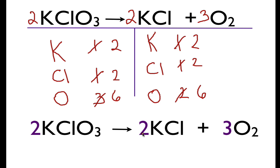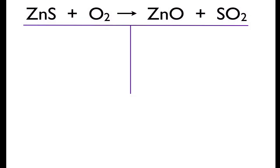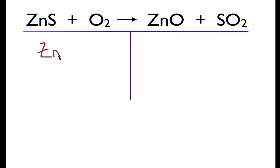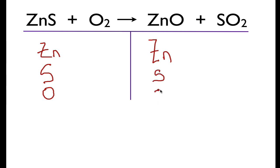You can see I went through the same process — made a table, tallied them up, and used a systematic process instead of just a guess and check. Let's try the last one, which is a little trickier. Here we have zinc, sulfur, and oxygen on the left. On the right we have the same elements: zinc, sulfur, and oxygen. On the left we have one zinc, one sulfur, and two oxygens. On the right we have one zinc, one sulfur, and three oxygens.